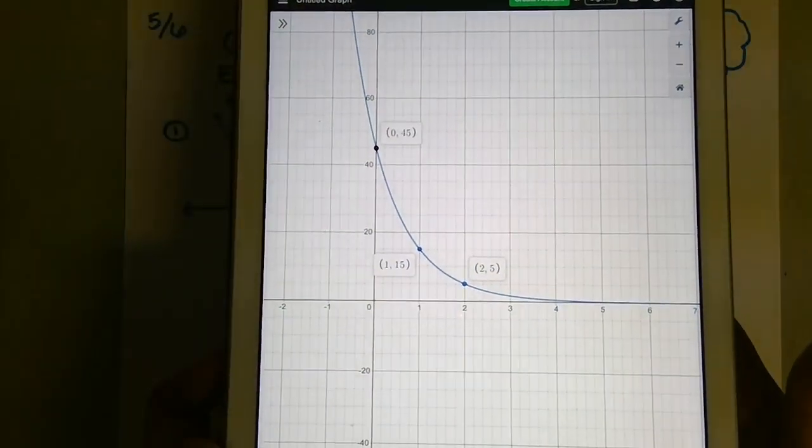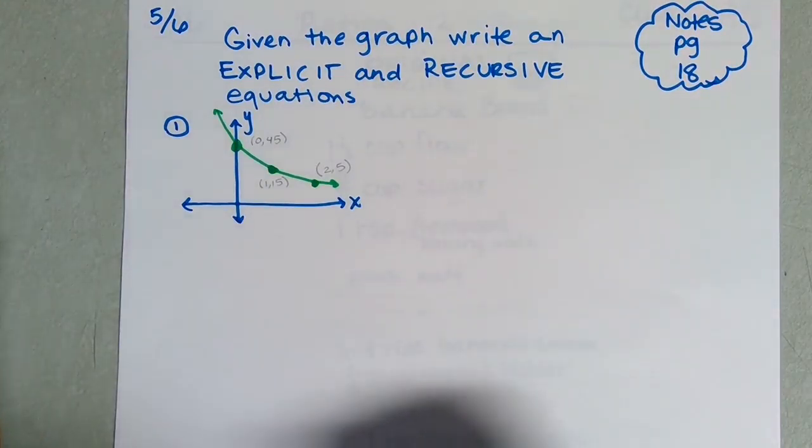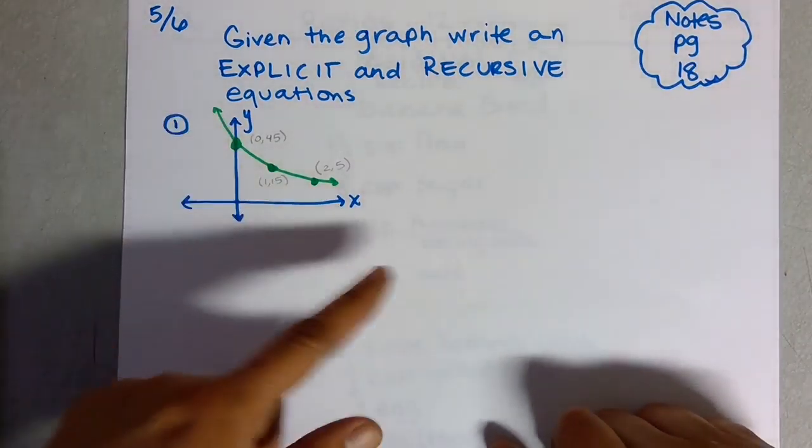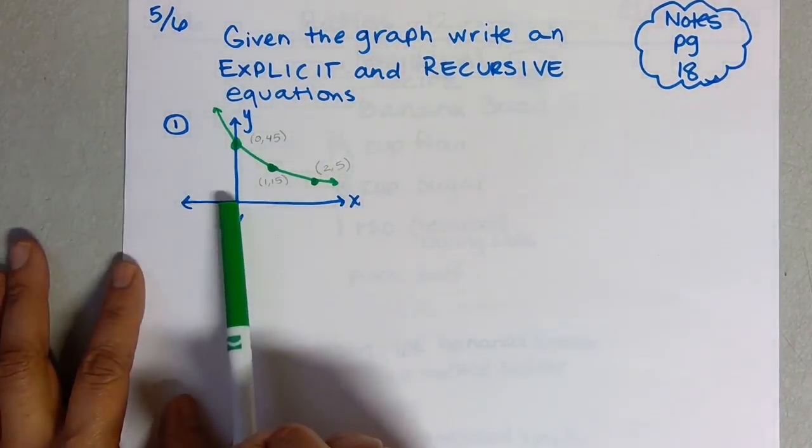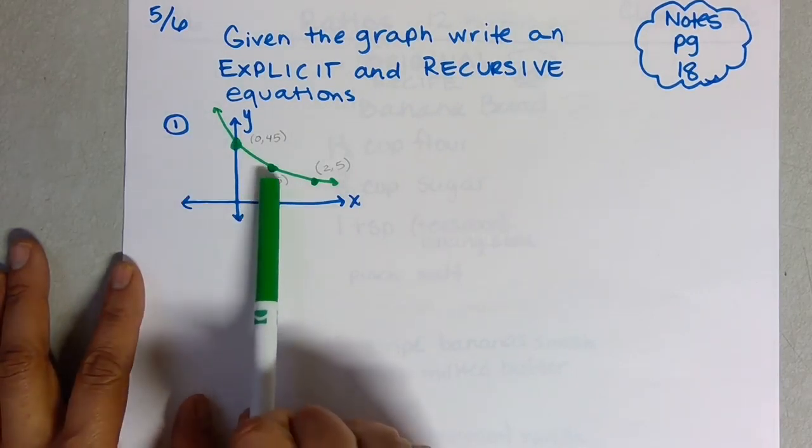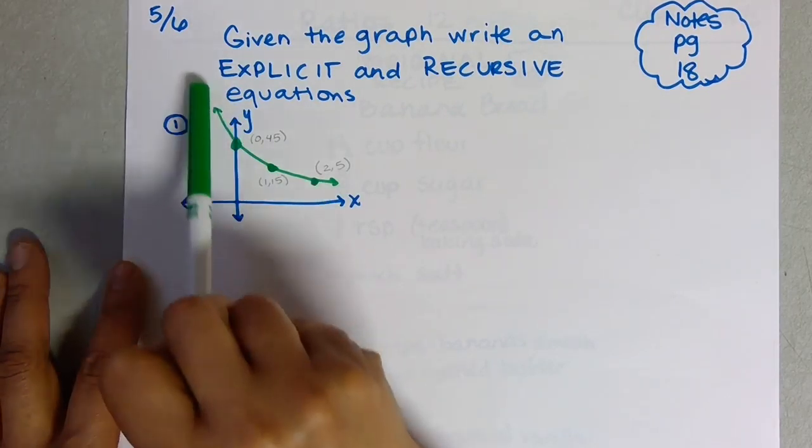We're going to take this graph which looks beautiful here and try to make a graph on our paper. Go ahead and copy this down—Notes page 18—label your x and y axis. We're going to label a couple of points: at 0 it crosses at 45, at 1 it's at 15, and at 2 it's at 5. I didn't scale it, I just made the natural shape of the graph.